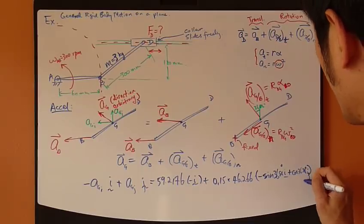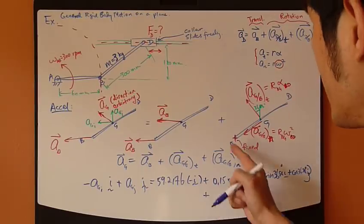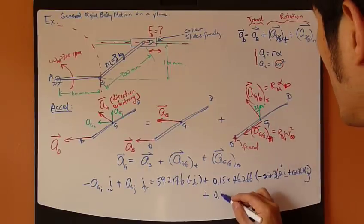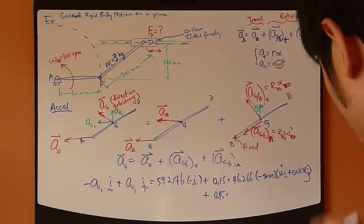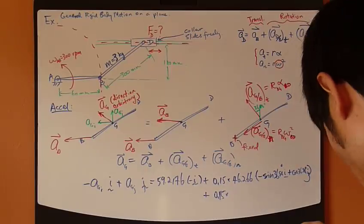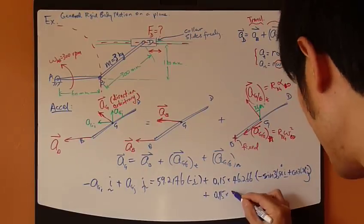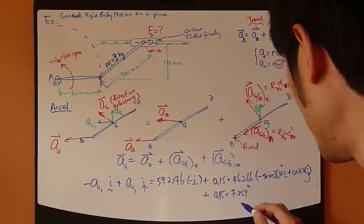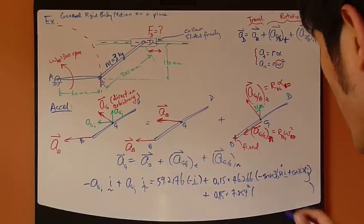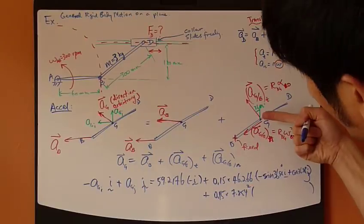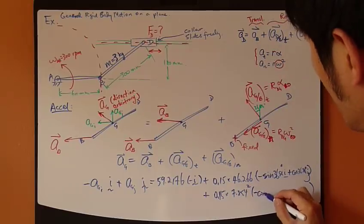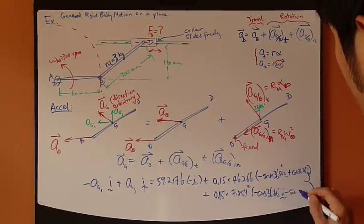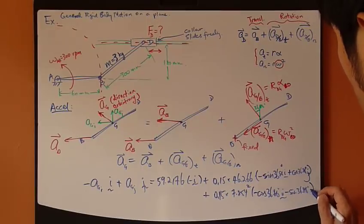Plus this last term, normal component, which is R omega square. R is 0.15, and omega BD has been found also before, and that is 7.854 squared. And then, the direction, which is negative cosine of 36.26, I, and negative sine 36.63, J.